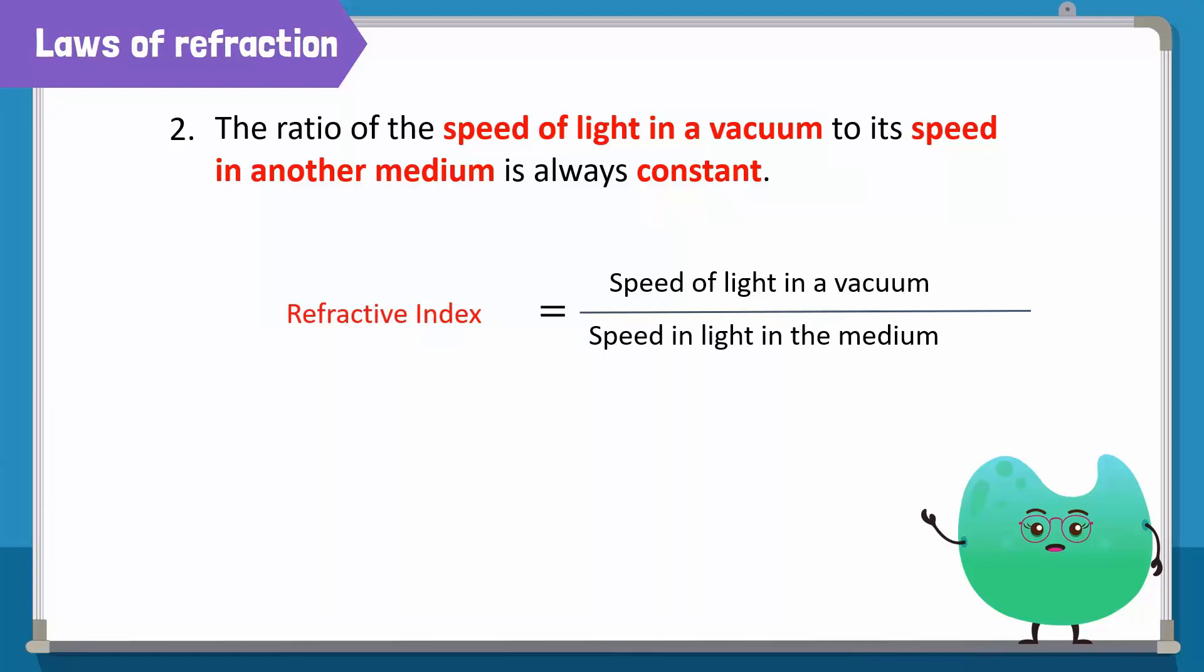In other words, the ability of a substance to refract or bend light is called its refractive index. It is denoted by the letter N.